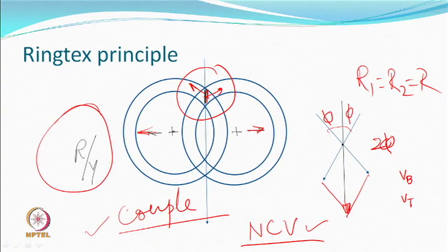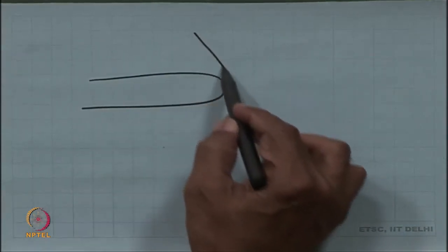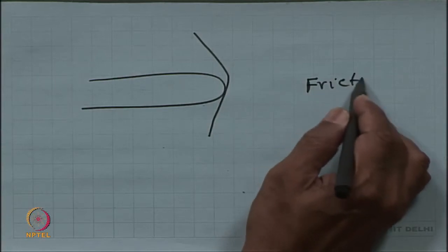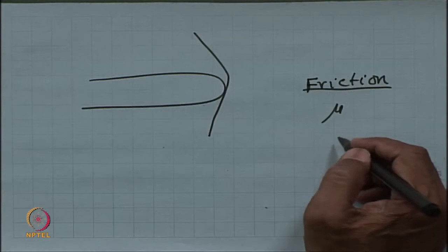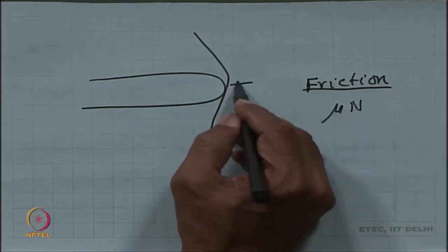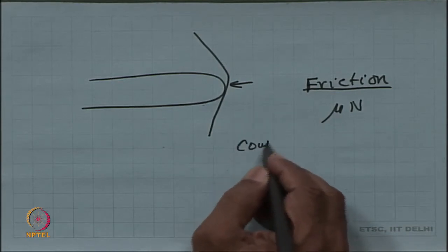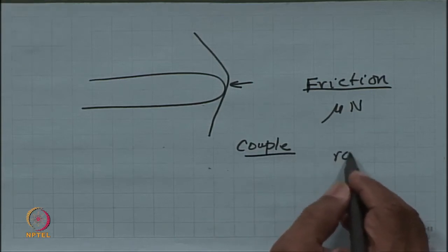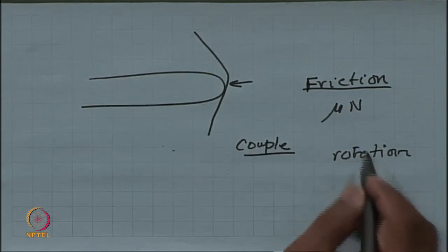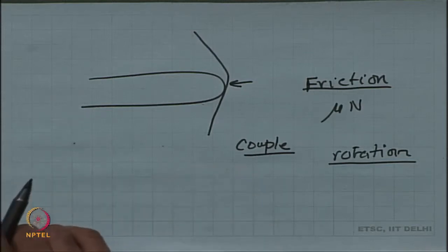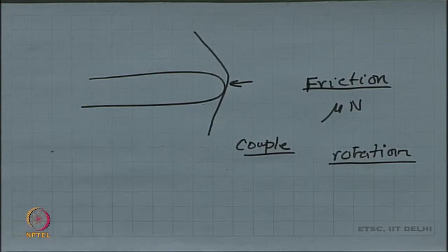A good question is: where was the couple getting generated in a disk system? When you had a disk, friction was there because you had mu and a normal force acting in the yarn. For a couple to be created, there has to be friction. In the case of a belt, one surface is moving in one direction, the other surface is moving in the other direction, on both sides of the yarn — so you had the couple. But where does the couple come from in a ring system?